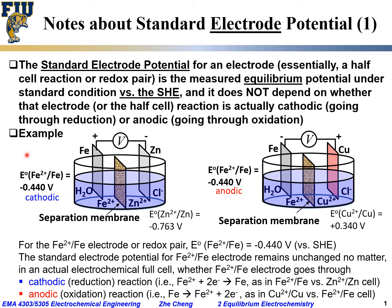In both cases, the standard electrode potential is the same — minus 0.440 V — because this number is measured against the same constant reference, which is the SHE. The standard electrode potential for this iron 2+ / iron redox pair is always minus 0.440 V, and similarly for any other redox pair or electrode.